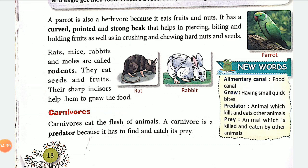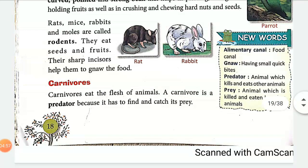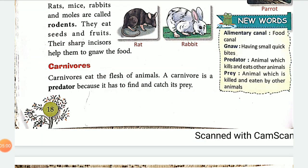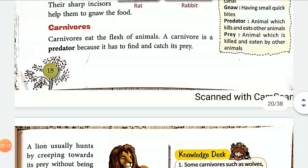Now let us look at some new vocabulary words. The alimentary canal is a tube-like structure where food goes inside the body. A predator is an animal that kills other animals and eats them. The prey is the animal that is killed and eaten by the predator.